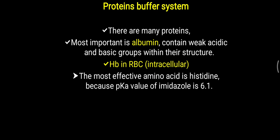The protein buffer system is the third type. There are many proteins in the body, but the most important is albumin, which is present in the plasma. Albumin is present in the highest concentration among plasma proteins and contains weak acidic and weak basic groups within its structure — some amino acids are weak acids and some are weak bases. Albumin acts as the main protein buffer system in the plasma. Another important protein is hemoglobin, present in red blood cells, which works as an intracellular protein buffer system.